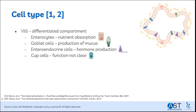The gut consists of multiple different cells at different locations. The villi are the tip of the gut that is in contact with the nutrients and toxins. Here, you can find enterocytes — the most abundant cell type of the gut, carrying out the main function of nutrient absorption. You can also find goblet cells, which produce mucus that helps the digestion and absorption of nutrients. Lastly, you have enteroendocrine cells that produce hormones, and cup cells, of which the function is not yet completely clear.